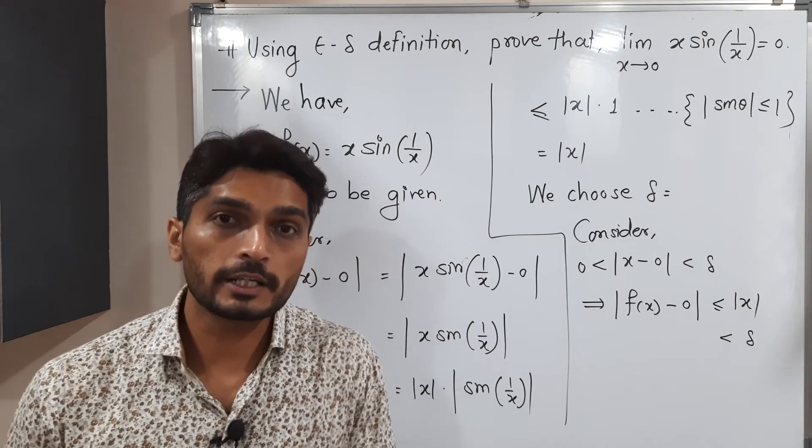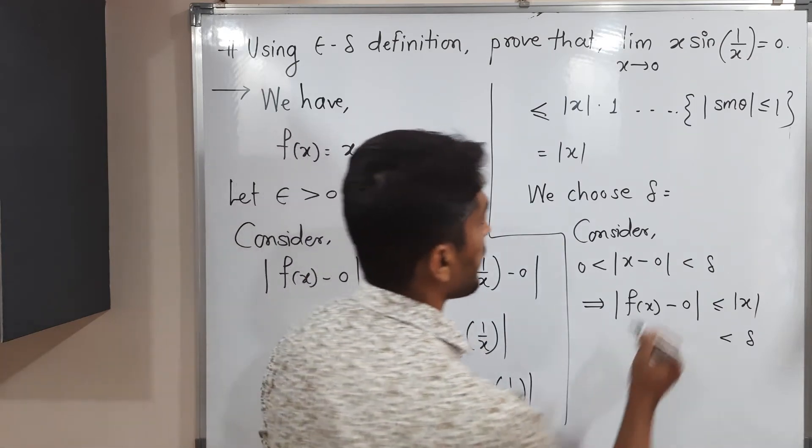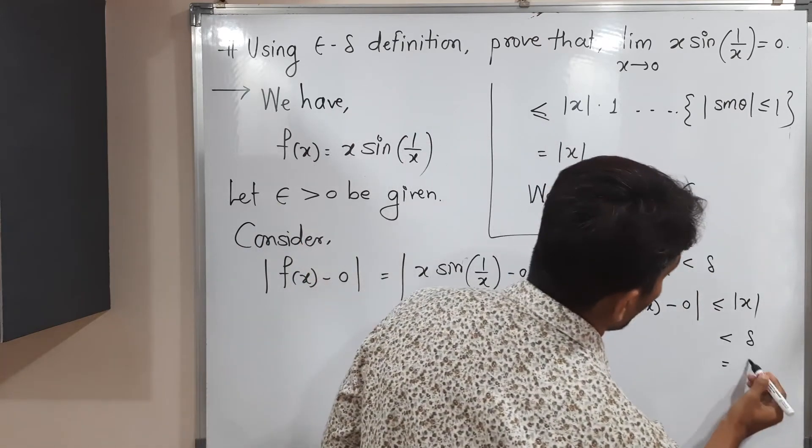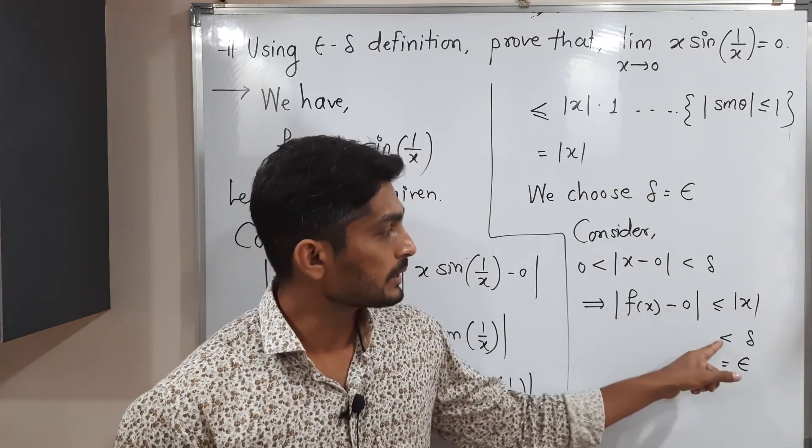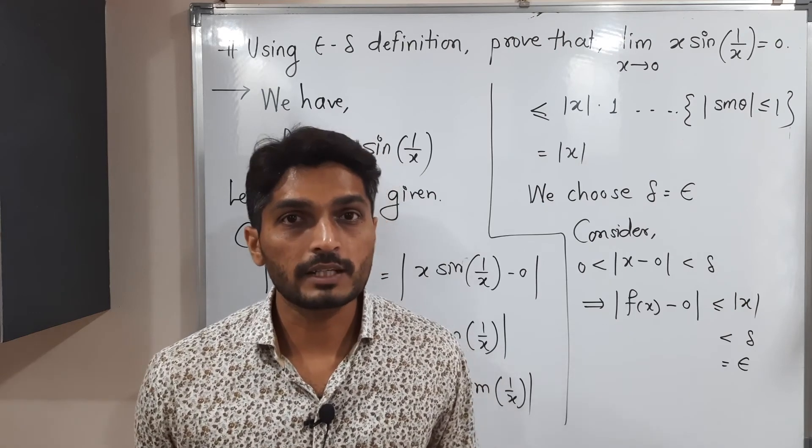What is our target? Our target is to prove that this is less than epsilon. So my choice of delta should be epsilon. So this is equal to epsilon. Yes, we got which we want. Mod f of x minus 0 is less than epsilon. Definition is satisfied and we can say yes.